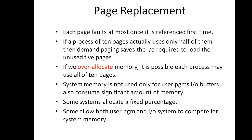But if we increase the degree of multiprogramming, we are over-allocating the memory. For example, if I run 6 processes each requiring 10 pages but actually using only 5, we again have higher CPU utilization and throughput. With 40 frames, instead of running 4 processes with 10 pages, I can run 6 processes with 10 pages but assume only 5 will be utilized — leaving 5 unused. So I allocate all 6 processes to the CPU.